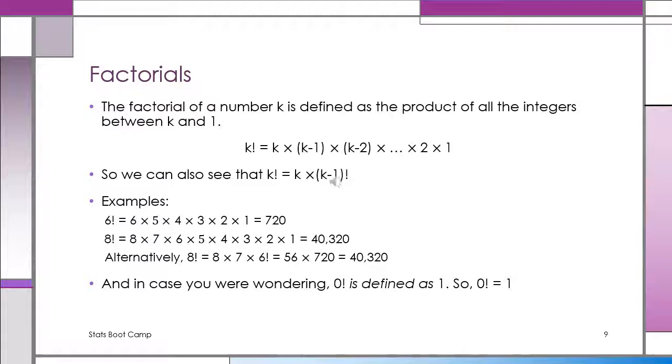And just so we have it as a starting point, some formulas need it. A 0 factorial, even if it doesn't make any sense, is the equivalent to 1. If you ever see 0 factorial, that's equal to 1.